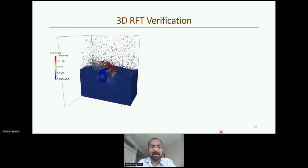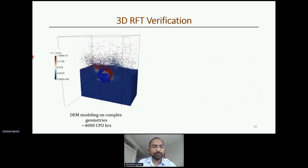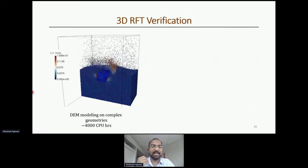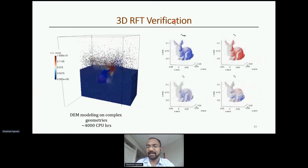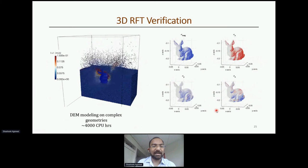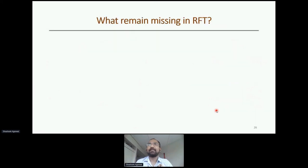We are now exploring whether we can model even more complicated shapes — for example, the Stanford Bunny used in the graphics community. That simulation took about four thousand CPU hours. The question is whether RFT, which takes about 40 seconds for the same simulation, can accurately model forces on all surfaces of the body. This is still ongoing work.